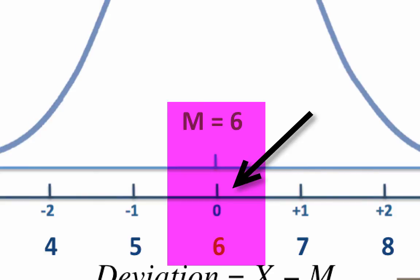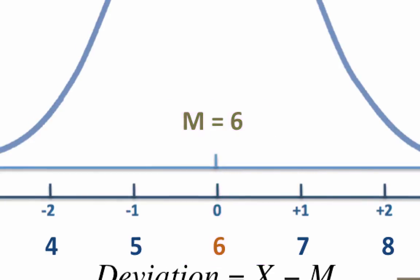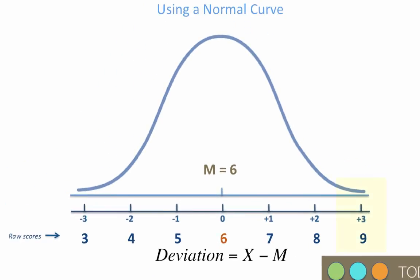The raw score of 6 has a deviation of 0. A score far above the mean is a higher raw score. The deviation of positive 3 is a raw score value of 9. A score far below the mean is a lower raw score. The deviation of negative 3 is a raw score of 3.